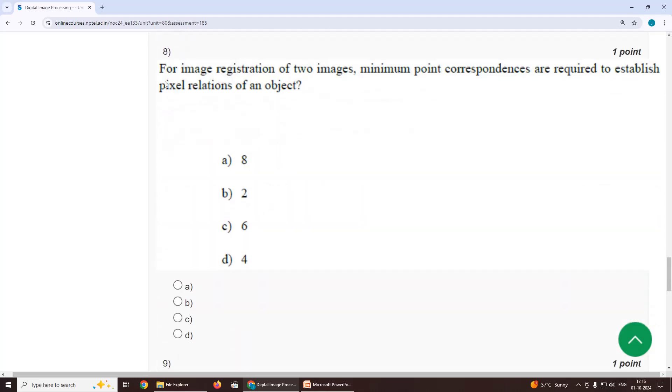Eighth one, for image registration of two images, minimum point correspondents are required to establish pixel relations of an object. Our suggestion is option D, four.